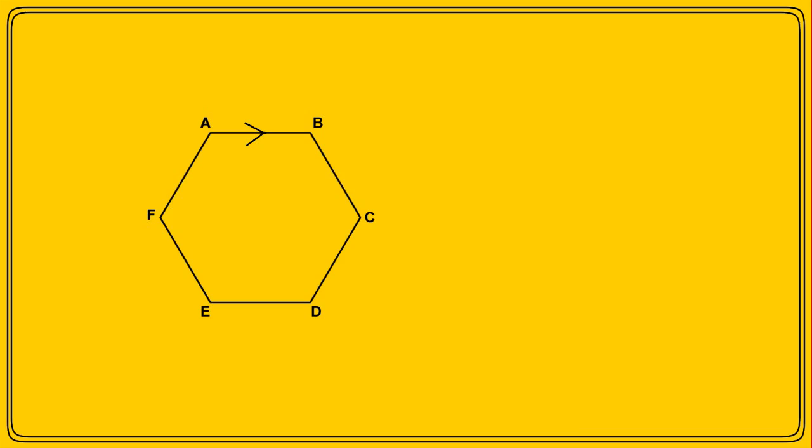In one of the first videos, I said there were three ways of representing vectors. The first was using the letters at either end of a line segment, as with the vector AB. The second is by labelling them with a small letter, such as vectors A and B in a diagram. Now the third method is using column vectors, and that's what we're going to deal with in this video.